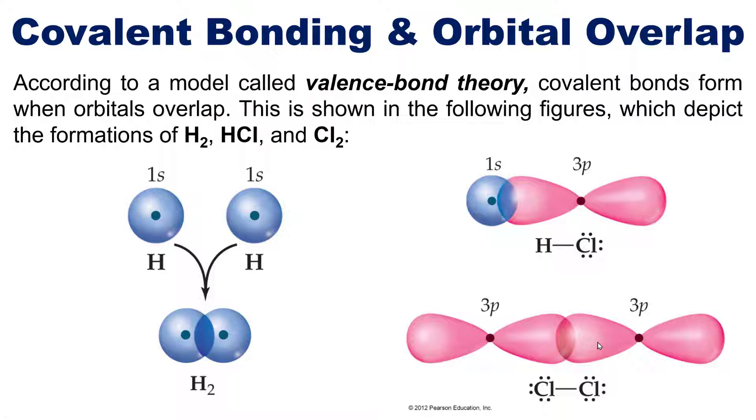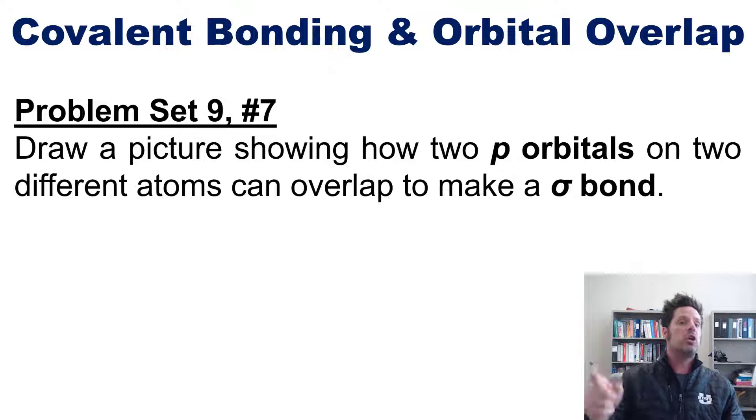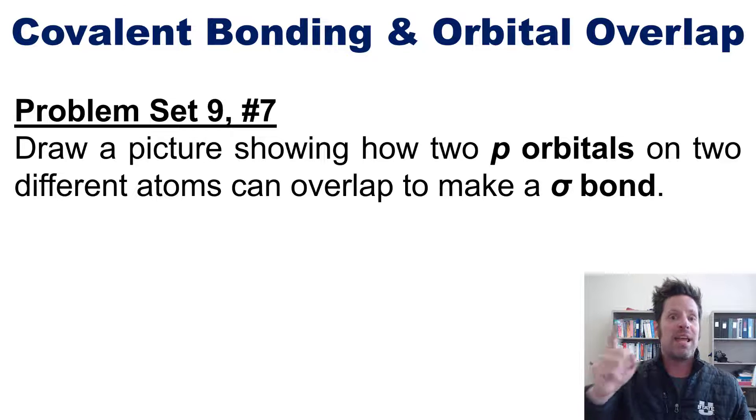So again, the bonds formed are all caused by orbitals overlapping with each other. Given that information, I would like you then to draw a picture showing how 2p orbitals on two different atoms can overlap to make a sigma bond.